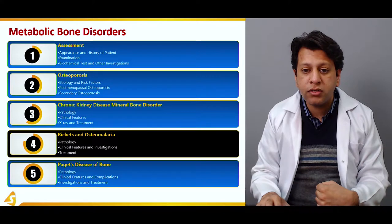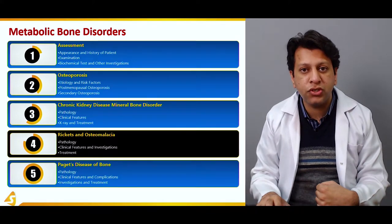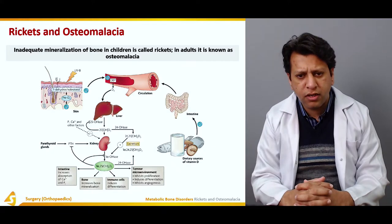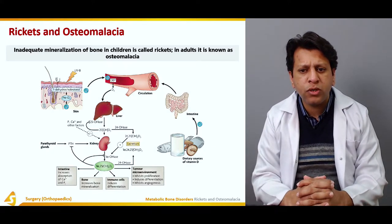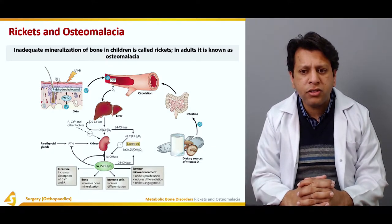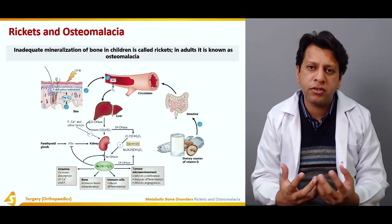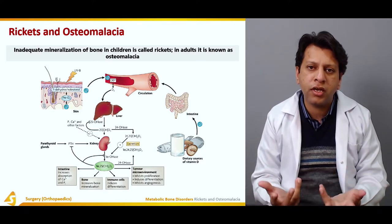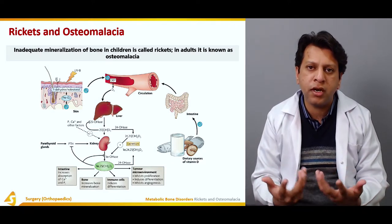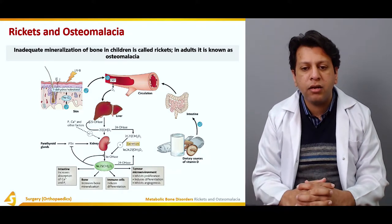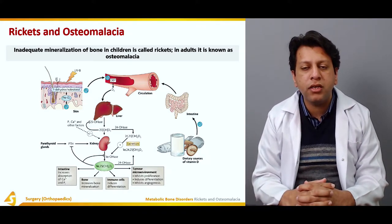We will go through the pathology, clinical features, investigations, and treatment. Rickets is inadequate mineralization of bone in children; in adults it's called osteomalacia. Basically there is defective, inadequate mineralization — not enough calcium hydroxyapatite in the bone.